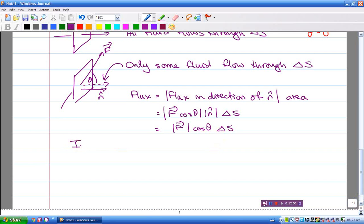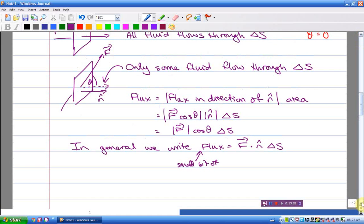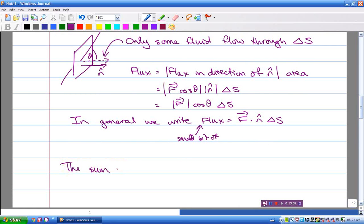In general, we write flux equals, well, a small bit of flux equals F dot N delta S. And then you'll notice when I wrote that integral, the sum of all such little bits of flux is double integral over the surface of F dot N dS.